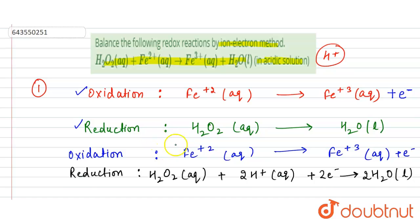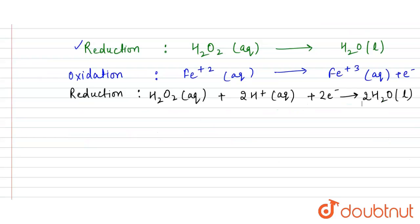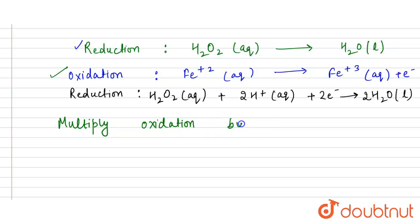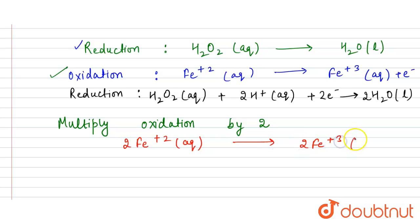We need to equalize the number of electrons between the two half-reactions. The reduction half-reaction has 2 electrons, so we multiply the oxidation half-reaction by 2. This gives: 2Fe²⁺ (aq) → 2Fe³⁺ (aq) + 2e⁻. Now both half-reactions have 2 electrons.